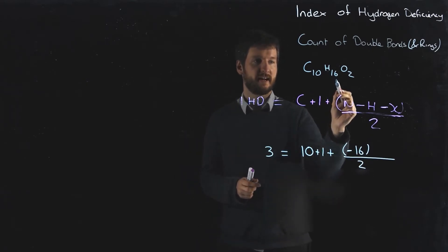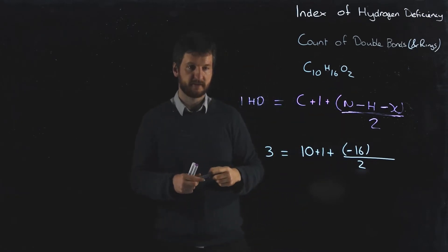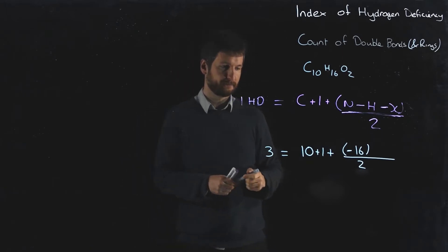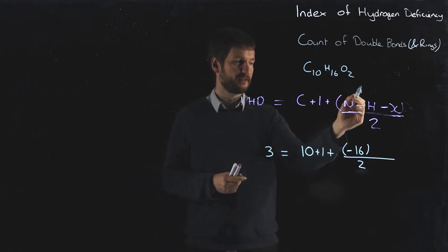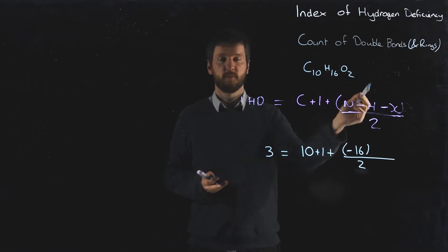So this molecule is going to have three double bonds or three rings in total, or some combination of double bonds and rings. You'll notice that the oxygens don't appear in this formula - we just ignore the oxygens in all cases.